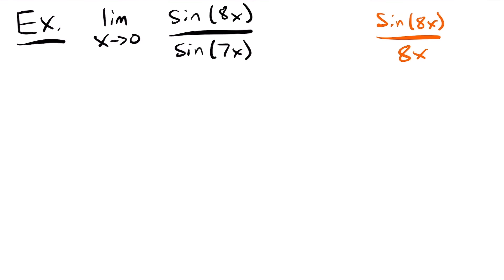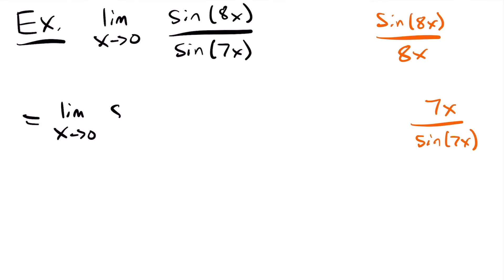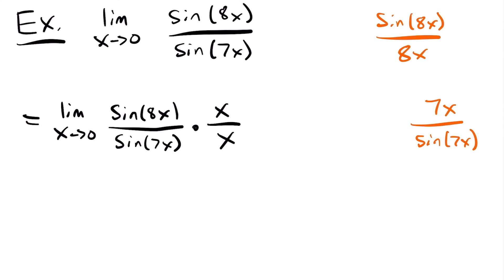We now know we can also look for 7x over sine(7x) in our expression. For the limit as x approaches 0 of sine(8x) over sine(7x), we need to multiply by several forms of 1 to get everything we need. We'll multiply by x/x to get an x on top and bottom, by 8/8 so we get an 8 in the denominator for sine(8x), and by 7/7 so we get a 7 in the numerator. Remember — always multiply by the full form, like 8/8, not just 8.